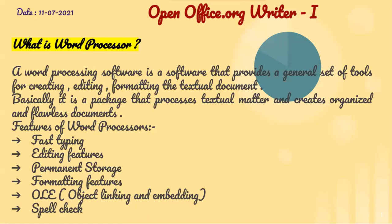What are the different features of a word processing software? First, fast typing and editing features — various types of editing features are available using which you can easily modify your document in a user-friendly way. You can fully interact with your document. Permanent storage: once your document is saved, it is permanently saved till you want to delete it. Unless and until you delete it, the document resides safely in your hard disk.